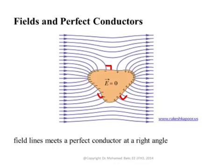At every point on the conductor, the field lines are normal to the conductor boundary. Regardless of the shape of the perfect conductor, electric field lines will always be normal to it. There cannot be any tangential field because there is no field inside the conductor, and by continuity of the tangential field, there can be no tangential field just outside the conductor either. On the boundary, the electric field must be normal.